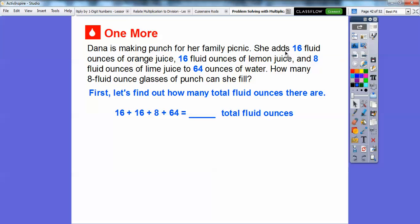First we need to find out how many total fluid ounces there are. We're going to add up all these numbers: the 16 fluid ounces of orange juice, lemon juice, then the eight fluid ounces of lime juice, and don't forget the 64 ounces of water. When we add all those up, we get 104 total fluid ounces. Then we want to know how many eight fluid ounces we can do.